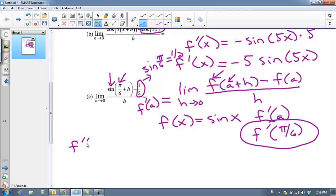So we should know that f prime of x is cosine. The derivative of sine is cosine. And so the derivative's value at π over six should be the cosine of π over six.